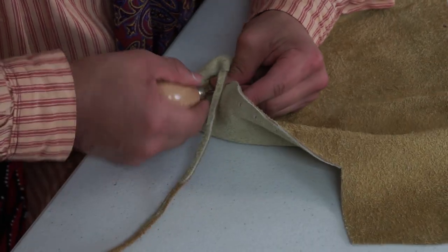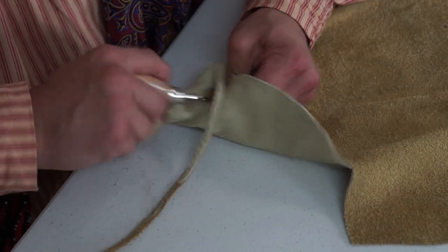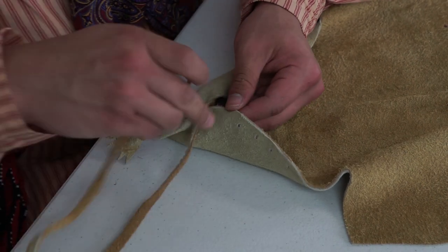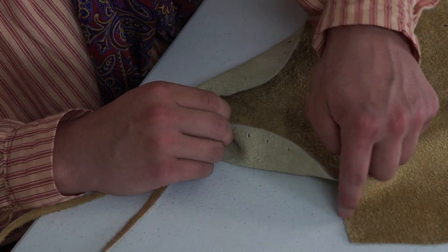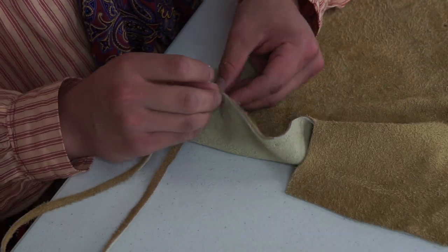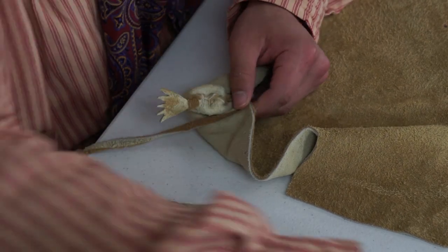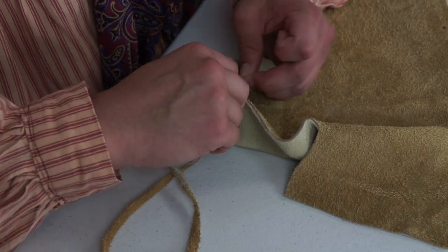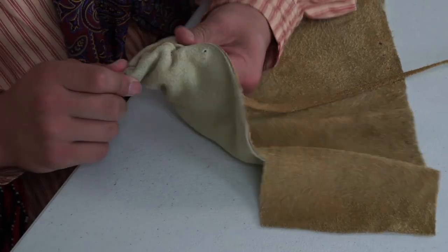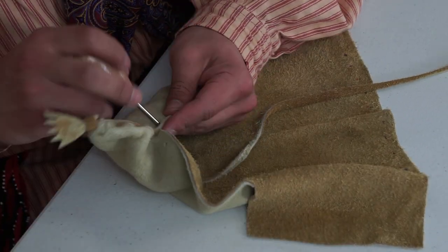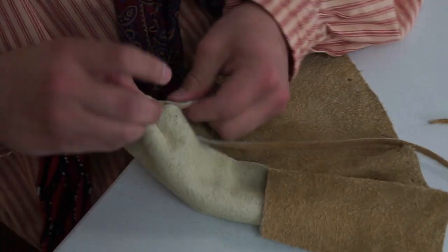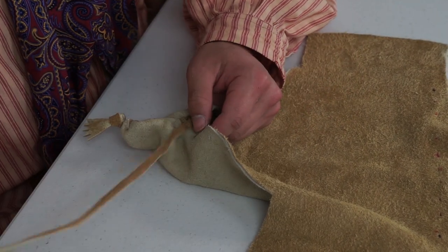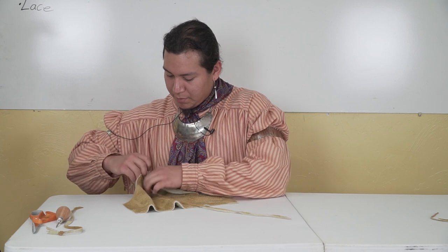And the cool thing about these moccasins is you can either leave them plain or you can bead them as well. You can bead them along through here or on the flap around the edges or on it. There are a few examples of Seminole moccasins that are beaded with wool on it. One has a zigzag shape pattern, the other has the recurved diamonds. There are all kinds of possibilities you can do with your moccasins.